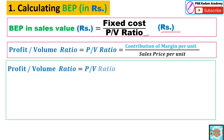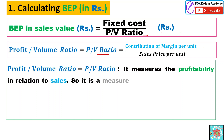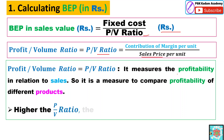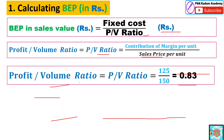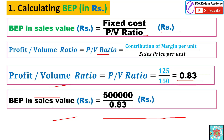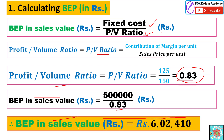The profit volume ratio (P/V ratio) is contribution margin per unit upon sales price per unit. It measures the profitability in relation to sales and is used to compare the profitability of different products. Higher the P/V ratio, higher the yield of the product. The P/V ratio is calculated as 125 upon 150, which equals 0.83. BEP in sales value in rupees is fixed cost upon P/V ratio, that is 5 lakh upon 0.83, and the answer is rupees 6,02,410.